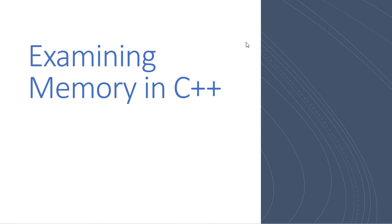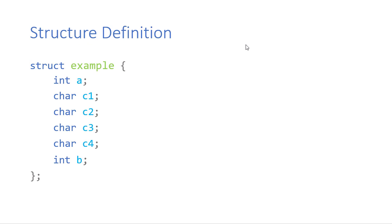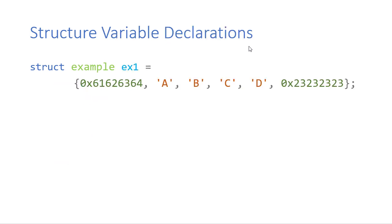Now that we've seen how to allocate memory and work with memory in C++, let's take a look at a technique we can use to actually examine memory byte by byte. Suppose we have a structure — this could be any data type — but for this example we're going to use a struct that has an int, four chars, and another int. We can initialize this structure with a hexadecimal integer literal, four characters, and then another hexadecimal integer literal.